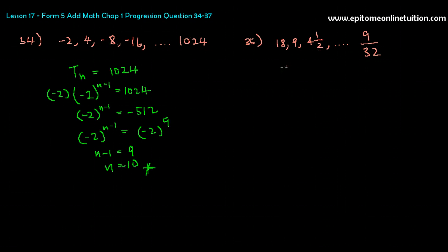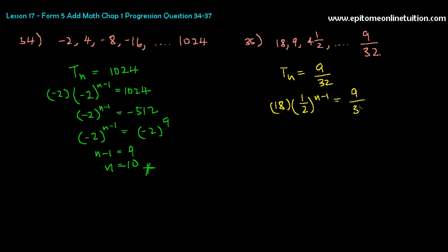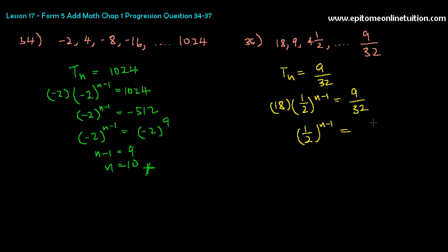It has the same meaning. So you're looking for Tn equal to 9 over 32. Tn is A, which is 18. R is half — 9 over 18. So: 18 times (1/2) to the power n minus 1 equals 9 over 32. Shift the 18 over. The technique is the same: 1 over 2 to the power n minus 1. So 9 over 32 divided by 18 is 1 over 64.